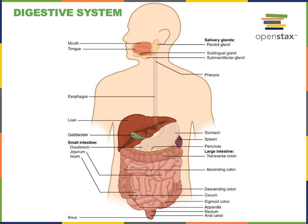The throat is also known as the pharynx. The pharynx takes over swallowing with the pharyngeal phase of deglutition, which propels the bolus down into the esophagus. Then the esophagus takes over with the esophageal phase of deglutition, propelling the bolus down into the stomach.